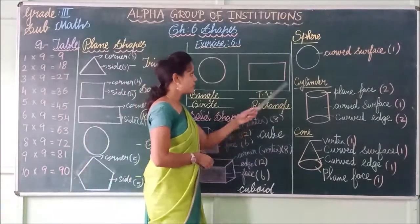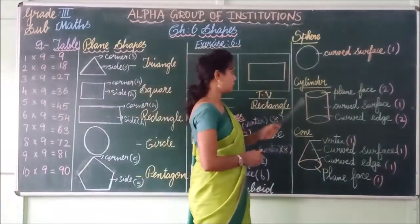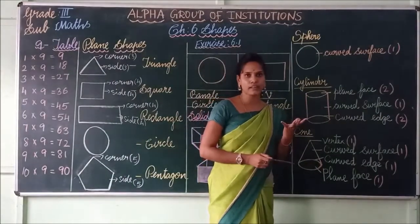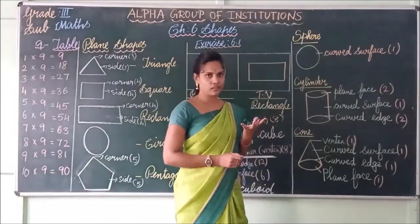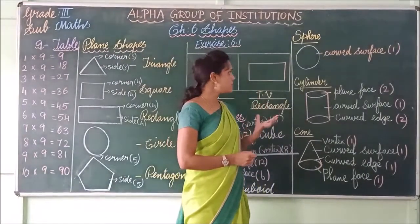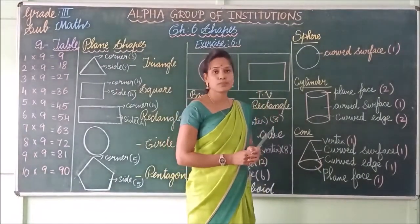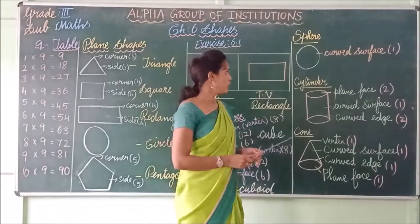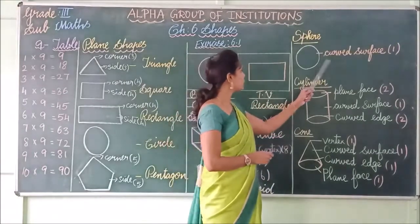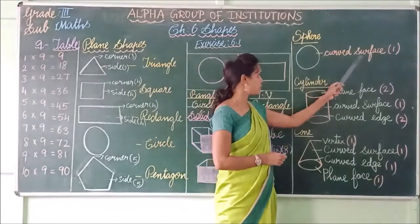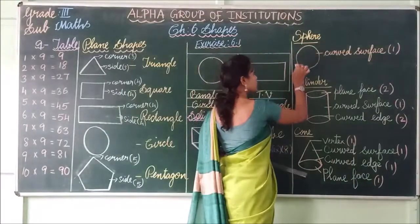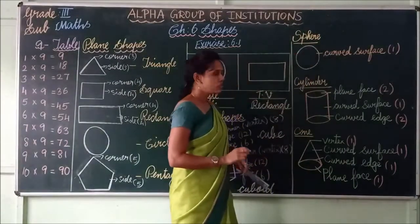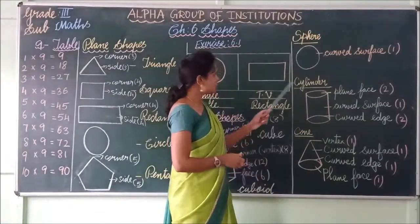Next one — sphere. You all have seen a ball, right? That is the sphere shape. Ball is the sphere shape. A sphere has only one curved surface.